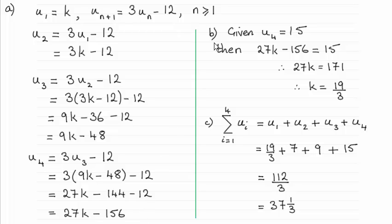Then for part B we're given u4 equals 15, so all I did was equate u4 here to 15 and solve the equation for k to give me 19 thirds.